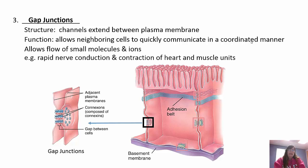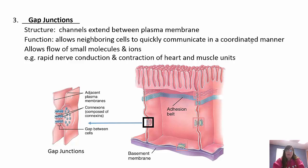Gap junctions are the communicating junctions - channels between plasma membranes that allow cells to communicate quickly and in a coordinated manner. Ions and molecules can pass right through. These are very important in our heart, which has intercalated discs containing many gap junctions. This allows the heart to contract as a unit - the top of the heart fully contracts before the bottom starts. Without this, we'd have backflow and improper function. It enables rapid nerve conduction and coordinated contractions.